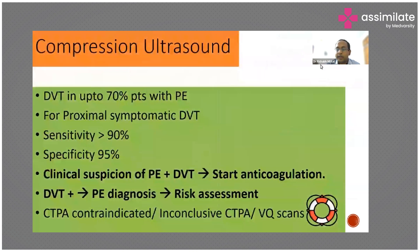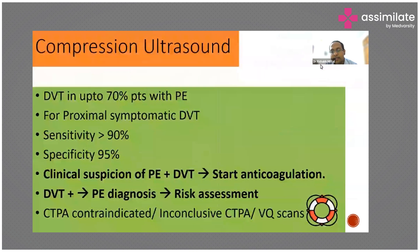Regarding compression ultrasound: there is a concern that performing it in a patient suspected of DVT might embolize the thrombus, but clinical evidence for this is not strong and guidelines actually recommend doing compression ultrasound when DVT is suspected. Its sensitivity for proximal DVT is around 90 percent, though it generally misses distal DVT. If there is clinical suspicion of pulmonary embolism with DVT on compression ultrasound, anticoagulation should be started. If only DVT is found, risk assessment, 2D echocardiography, and CT pulmonary angiography may be needed.